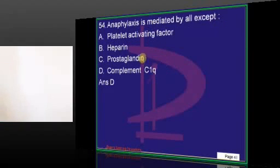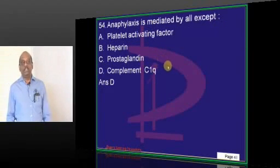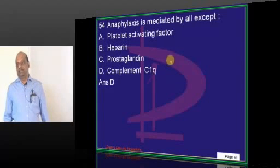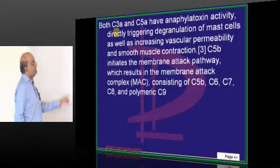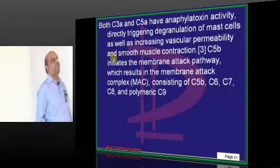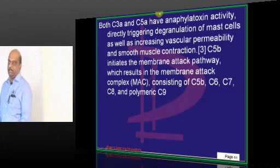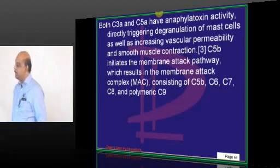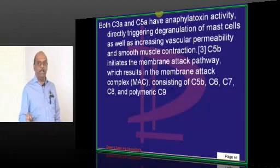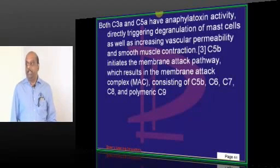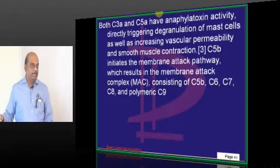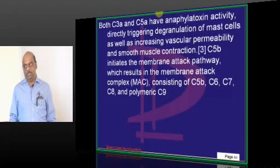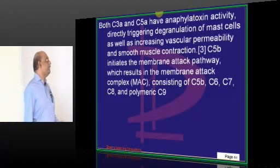Anaphylaxis mediated through the complement pathway involves anaphylotoxins. C3a and C5a are the ones which have the anaphylotoxin effect. If you got this wrong, you need to review the complement pathway, including alternate and classical pathway functions — iron that out today evening only.